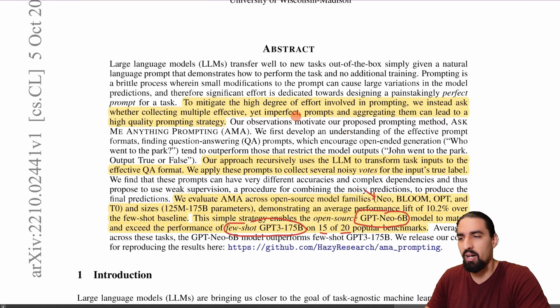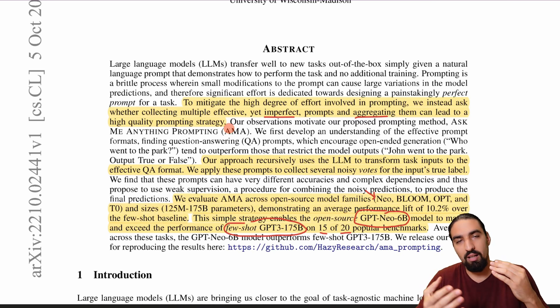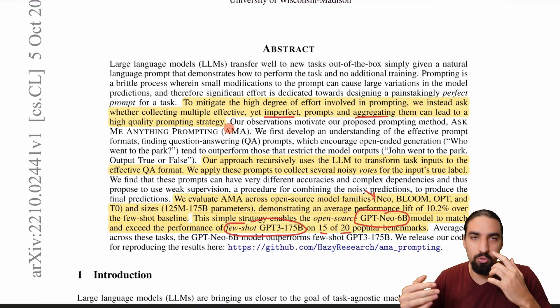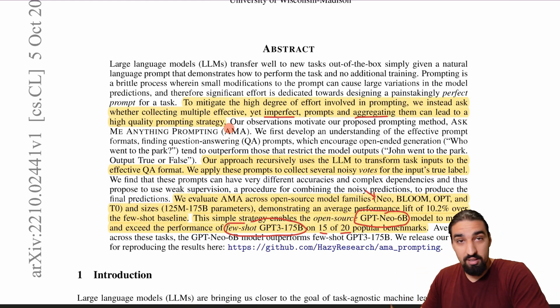So they say here to mitigate the high degree of effort involved in prompting we instead ask whether collecting multiple effective yet imperfect prompts and aggregating them can lead to a high quality prompting strategy. So as you probably all know people spend a lot of time finding the exact right prompt that's gonna give them the best result on a particular task and that's gonna bother some and takes a lot of time. So there is a need to create these methods that are automatic and that can reliably give better performance across a suite of tasks.